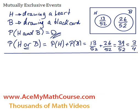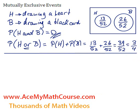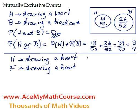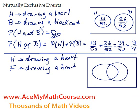But now let's talk about events that are not mutually exclusive. I'll still use H for drawing a heart — just drawing one card from a well-shuffled deck of 52 cards. And event F will be drawing a face card: a jack, a king, or a queen from the standard deck. I'm assuming you're all familiar with the deck of 52 cards; if not, go ahead and Google it.